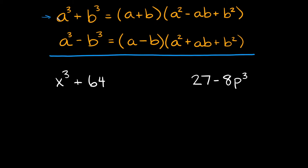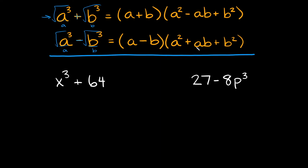For this first one, if you ever have two perfect cubes and you're adding them together, in order to factor it, all you need to do is take the cube root of each of these. When you take the cube root, you'll solve for A and B, and then you simply plug this into this formula right here. Similarly, whenever you have two perfect cubes and you're subtracting them, you just take the cube root of each of your terms, solve for A and B, and plug it into this second formula. And that's how you factor them.